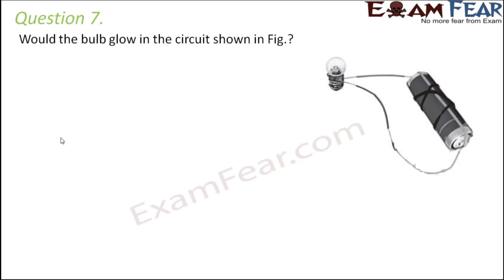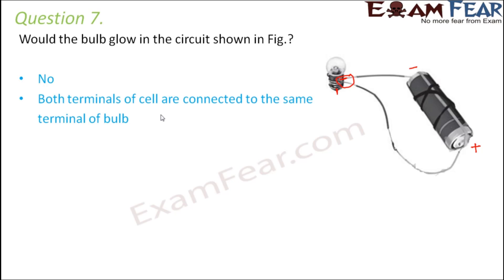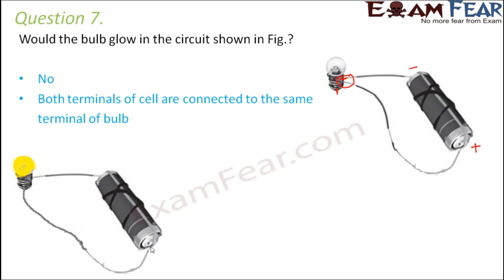Question number seven — Would the bulb glow in the circuit shown in the figure? Here the bulb and battery are connected, but both the positive and negative terminals of the battery are connected to the same terminal of the bulb. For the bulb to glow, each terminal of the battery should connect to a different terminal of the bulb. To fix this, the positive terminal should be connected to the base terminal of the bulb, and then the bulb would glow.